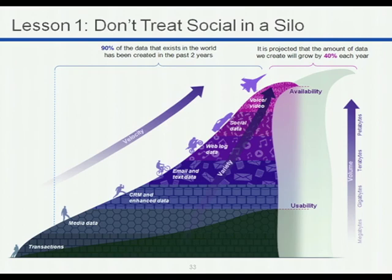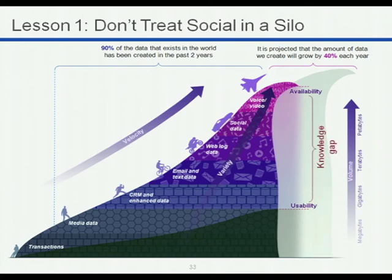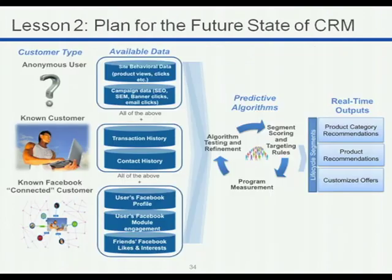A few lessons. First: don't treat social in a silo. We did end up merging with a CRM company that specialized in taking data and merging it together to create value. Ultimately, your ability to produce value is just a function of the data you have access to. Whatever knowledge gap you have, if you can bridge that — usable data versus available data — no matter how much data you think you have access to, there's always more to be had. Social is right below voice and video in that data spectrum. So the first step is growing that data.